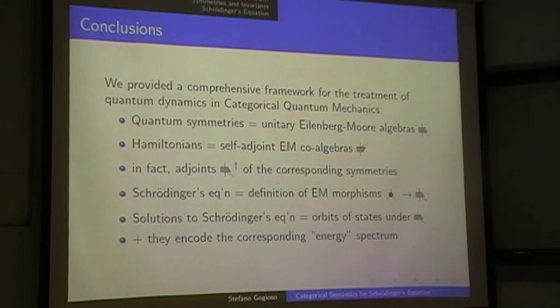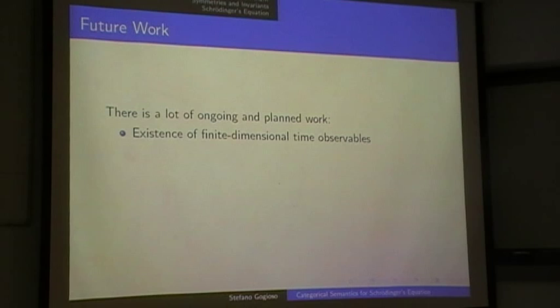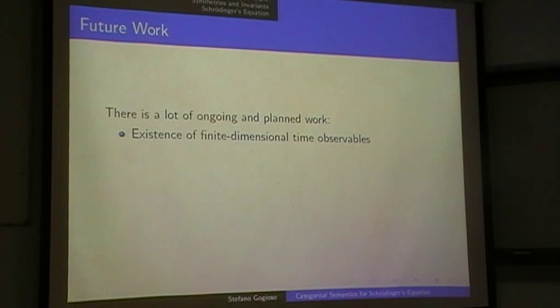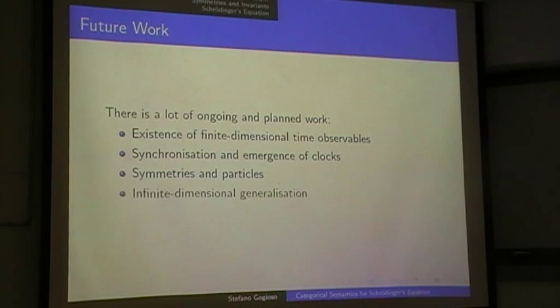There is a lot more work going on. You can conclude by using the fact that strong complementarity gives canonical commutation relations, the existence of finite-dimensional time observables, and necessary and sufficient conditions on when this happens. You can talk about synchronization and emergence of clocks in quantum mechanics, and symmetries and particles — one of the most common uses of non-abelian symmetries. Finally, I would like an infinite-dimensional generalization going to Pontryagin theory and the Gel'fand-Naimark theorem, but that is further down the line because the CQM framework in infinite dimensions is much harder to work with. Anyway, that's pretty much it. Thanks for your attention.